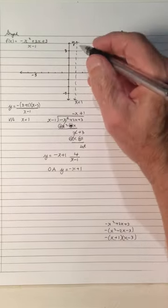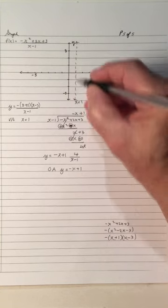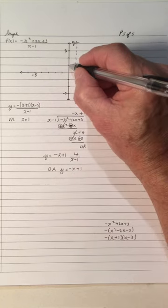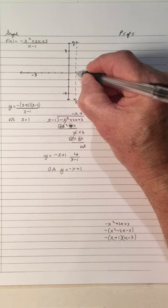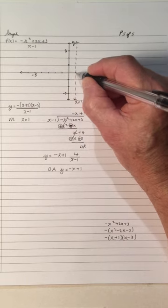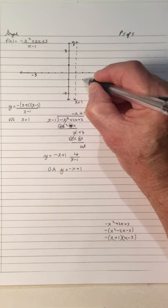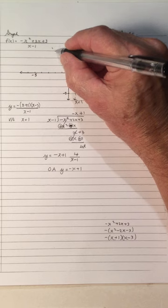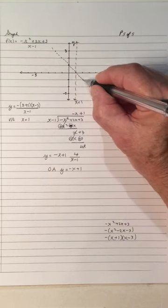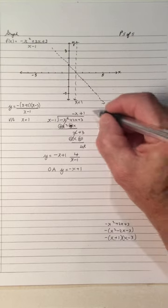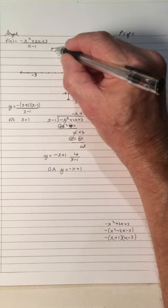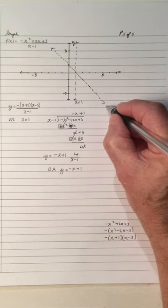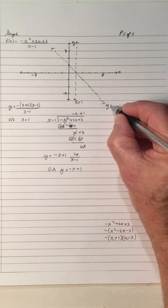Let's plot the oblique asymptote y equals negative x plus 1. The y-intercept of the asymptote is 1, right here. The slope is negative 1, so it's down 1, right 1. We go through several points. This is an oblique asymptote going diagonally — it's going down to the right (negative slope). The graph goes towards this oblique asymptote as x goes to infinity, either going towards it in this region or out here going towards the vertical asymptote.